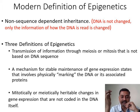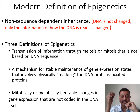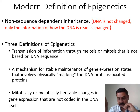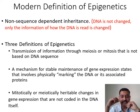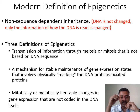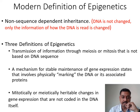Three definitions of epigenetics are proposed. The first is the transmission of information through meiosis or mitosis that is not based on the DNA sequence. The second is a mechanism for stable maintenance of gene expression states that involves physically marking the DNA or its associated proteins — analogous to introducing punctuation or exclamatory marks. The third defines epigenetics as mitotically or meiotically heritable changes in the genetic component not coded in the DNA itself.